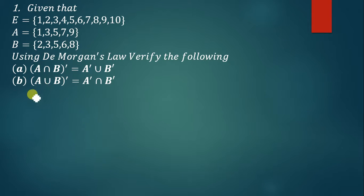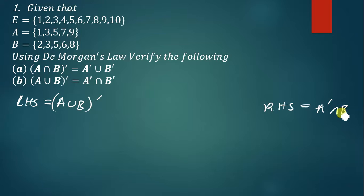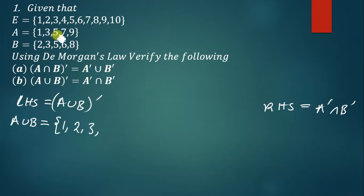For the second law, we first get the left hand side, which is (A∪B)', and then the right hand side, which is A'∩B'. To find (A∪B)', we first find A∪B. Union is the addition of two sets — we combine set A and set B, and elements that are common are only listed once. So A∪B = {1, 2, 3, 5, 6, 7, 8, 9}.